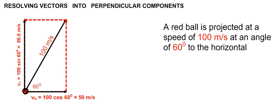We can now say that projecting a ball at 100 meters per second at 60 degrees above the horizontal is like projecting a ball with two simultaneous velocities: a velocity along the horizontal of 50 meters per second and a velocity along the vertical of 86.6 meters per second. Remember that perpendicular components of any vector act independently of each other.